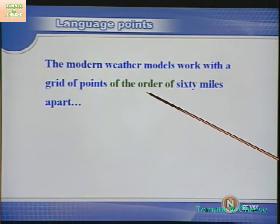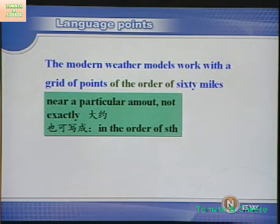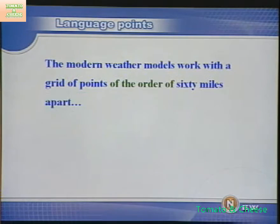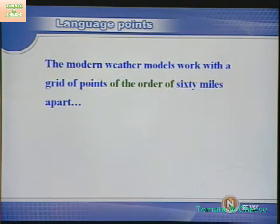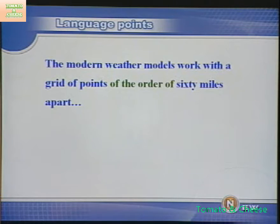下一个语言点：The modern weather models work with a grid of points of the order of 60 miles apart. "Of the order of"意思是near a particular amount, not exactly——大约，也可以写成in the order of something. "Of the order of 60 miles apart"即每个点大约间隔60英里。这句话主要讲气象模型坐标图上的点间隔大约60英里，即使这样，地面工作站和卫星还是不能看见地球上的每一个地方，因此天气预报还得靠猜测。